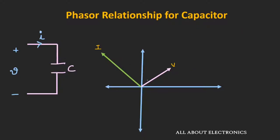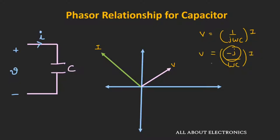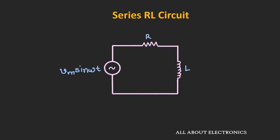Similarly, for the purely capacitive circuit, the current will lead the voltage by 90 degrees. We can represent this voltage V as 1 divided by jωC into I, or equivalently minus j times 1 over ωC into I. Whenever any term is getting multiplied by the minus j operator, the phasor will get rotated 90 degrees in the clockwise direction. That is why here the voltage lags the current by 90 degrees. Now let us see how to draw the phasor diagram for the series RL circuit.